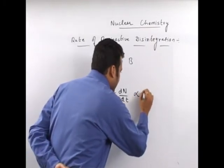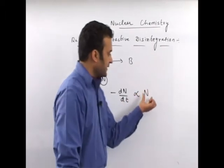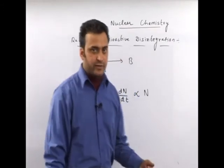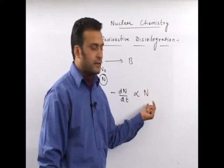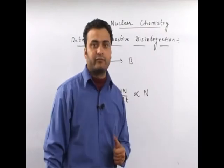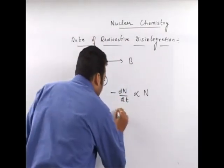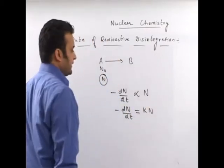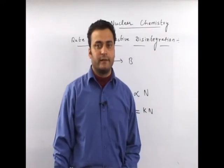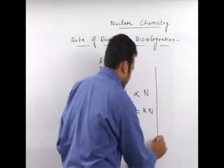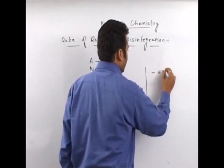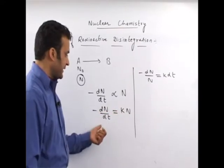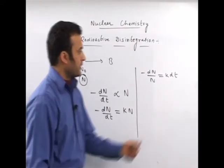The rate of radioactive disintegration is directly proportional to N — the number of atoms present at that particular instant. So, minus dN upon dt is equal to KN, where K is the decay constant or disintegration constant. Rearranging: minus dN upon N equals K dt.